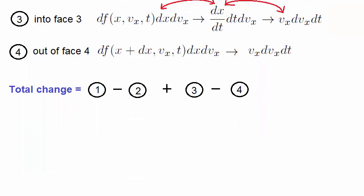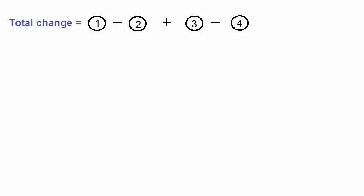From above, the total change was shown to be given by this. The changes between faces 1 and 2 has been shown to be given by this. Note that there is a minus sign because of the order of the difference between faces 1 and 2 that we've chosen. We do this for mathematical convenience, as we'll see shortly. Similarly, the difference between the particle numbers between faces 3 and 4 is given by this.